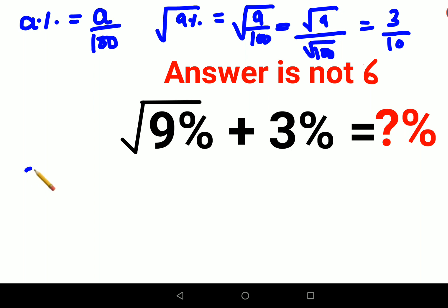So here this will become 3 upon 10 plus 3% that can be written as 3 upon 100. Now since the denominators are not the same, we will have to take the LCM and here the LCM comes out to be 100.